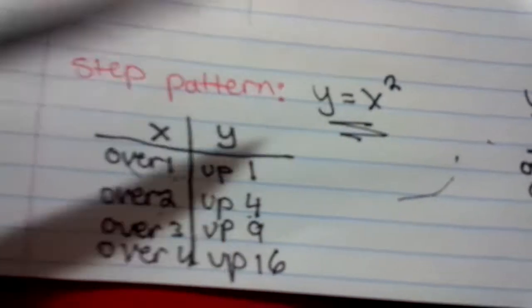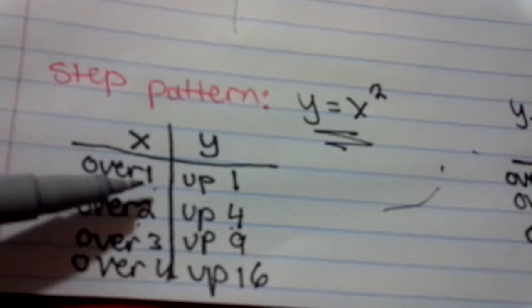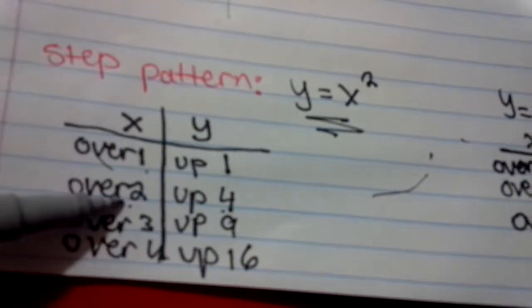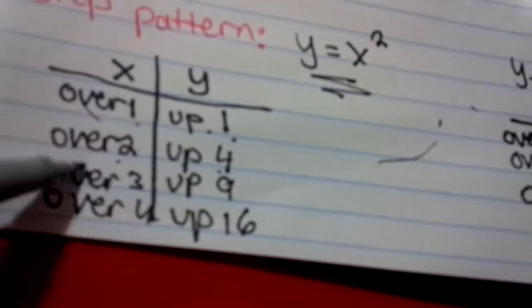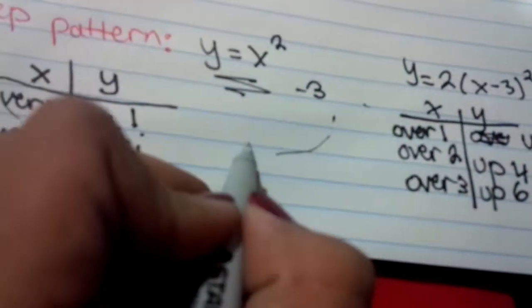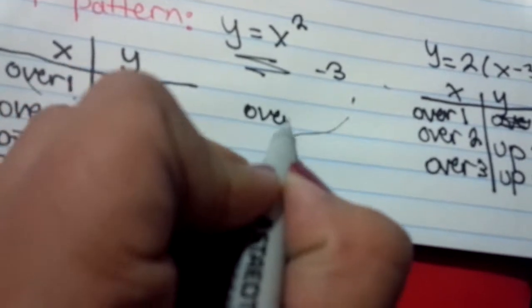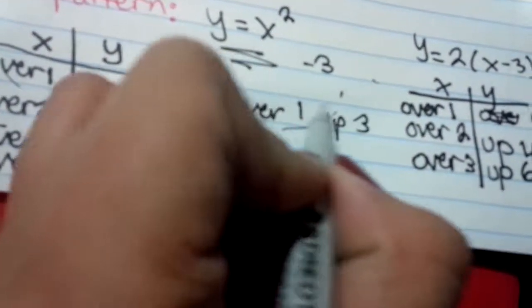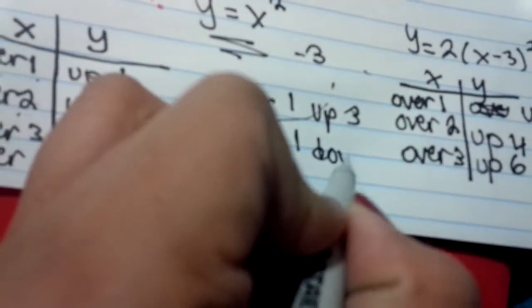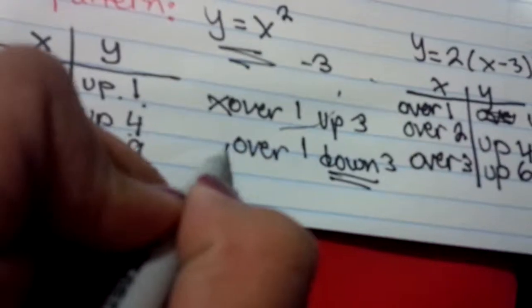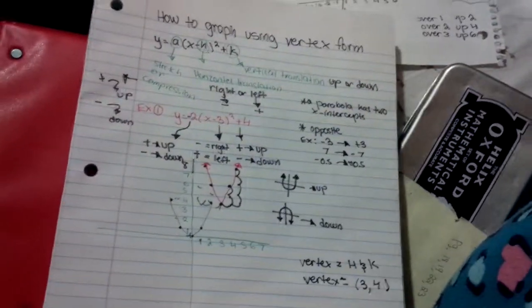We also need to know the step pattern for the basic parabola y equals x squared: one squared is 1, two squared is 4, three squared is 9 — so over one up one, over two up four. And if a is negative, instead of going up you go down. That's how you graph using the vertex formula. Thank you.